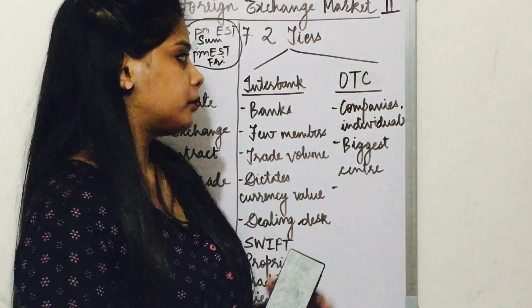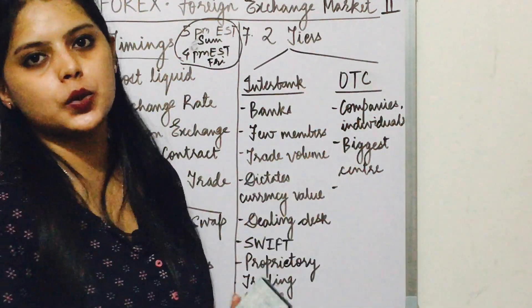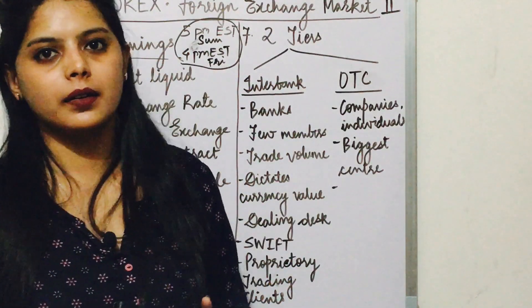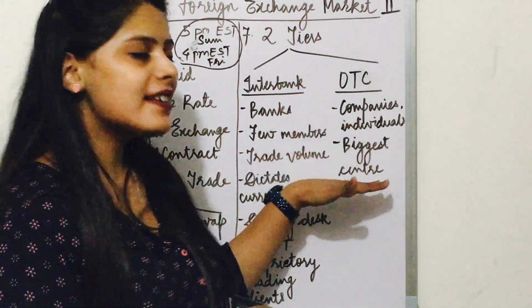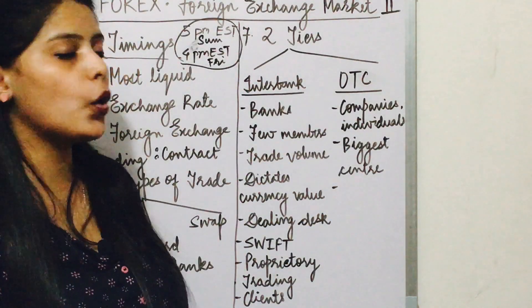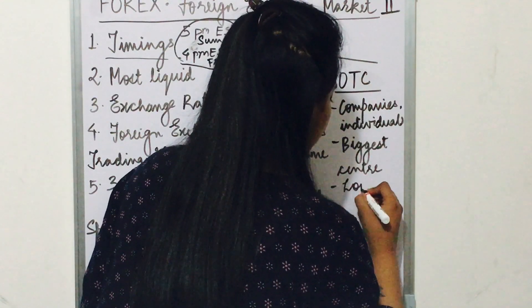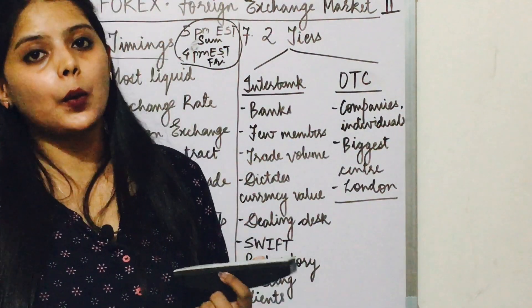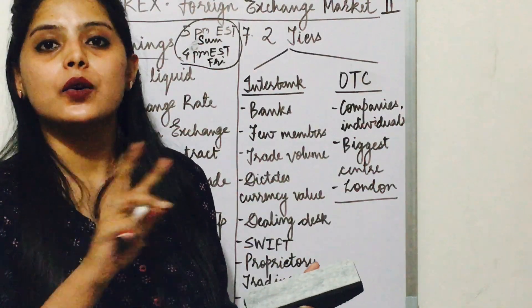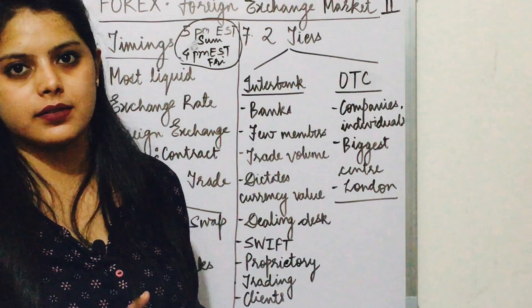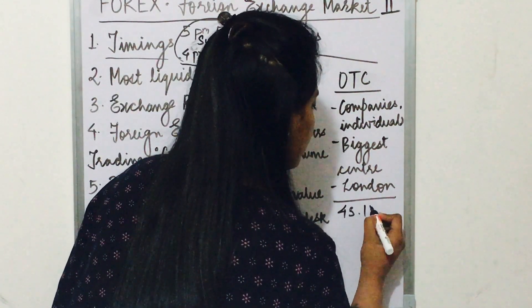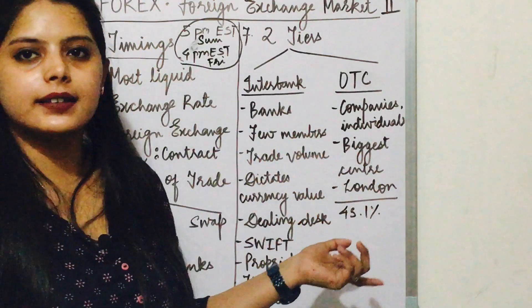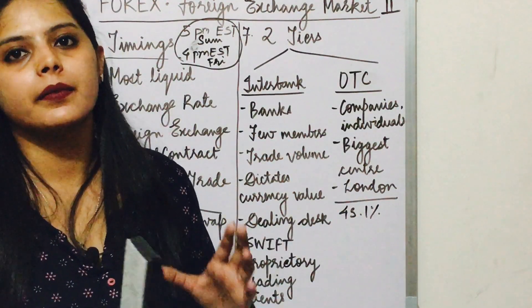Next is over the counter. OTC trading is mostly for companies and individuals — they can trade foreign exchange directly over the counter. As reported in April 2019 data, London accounts for 43.1% of global trade volume, making it the biggest center. That is why the market price and exchange rate is largely determined by London.